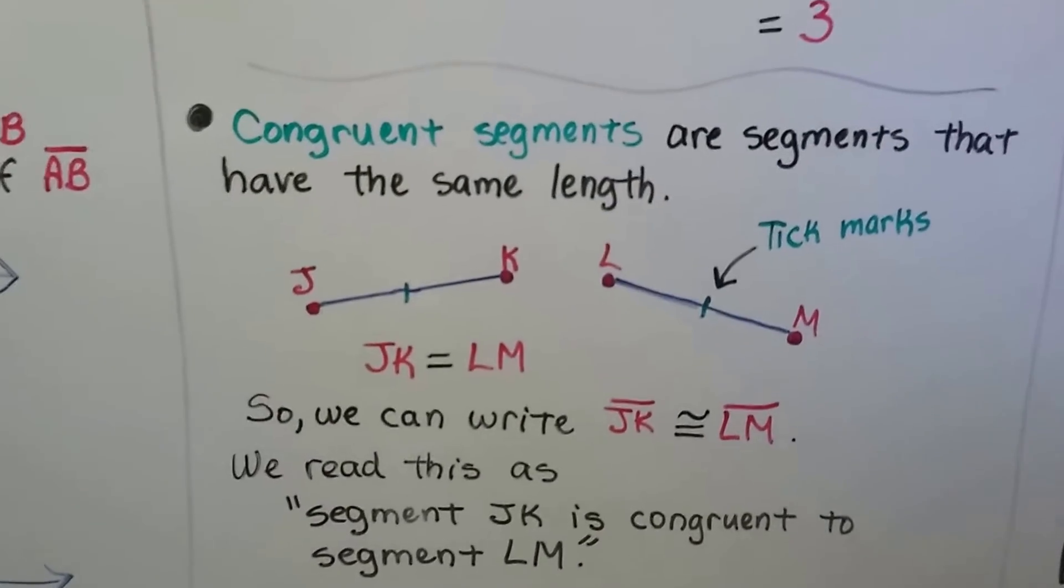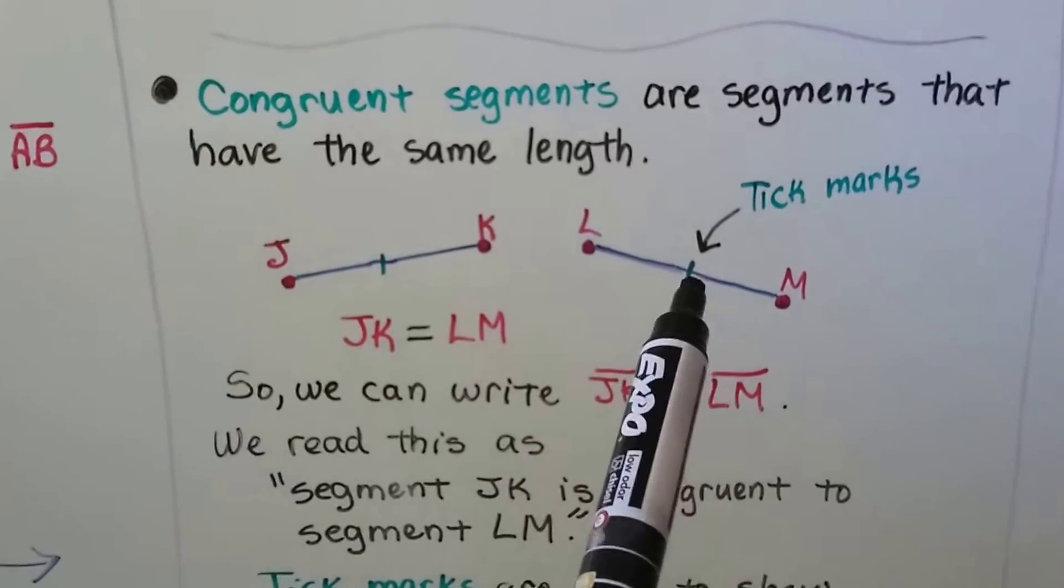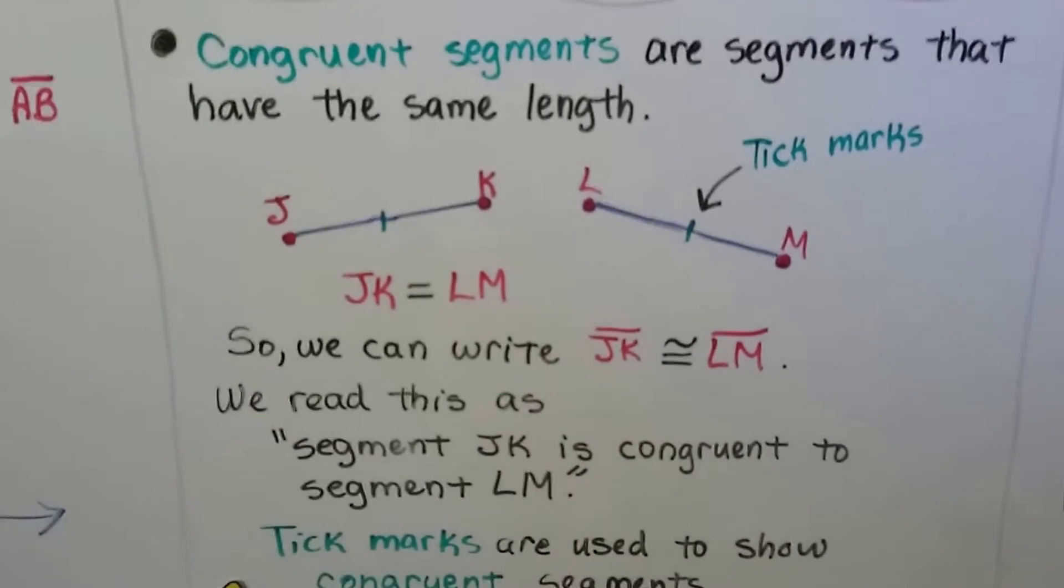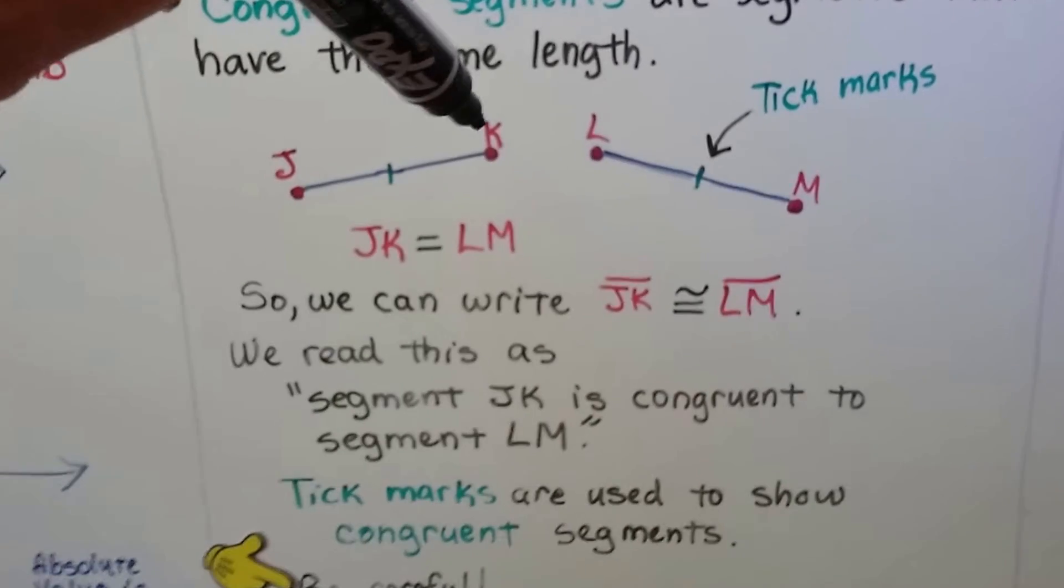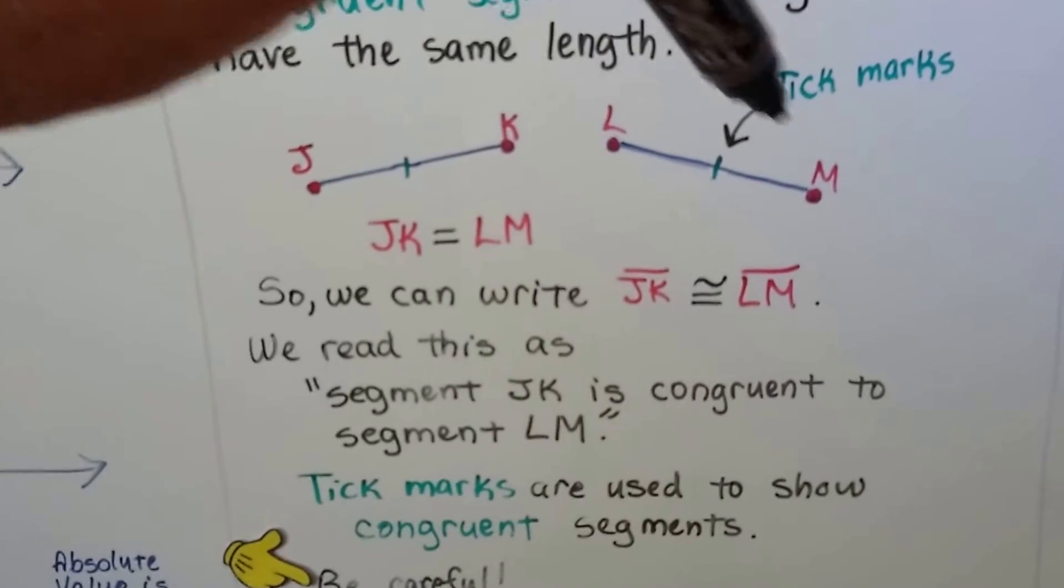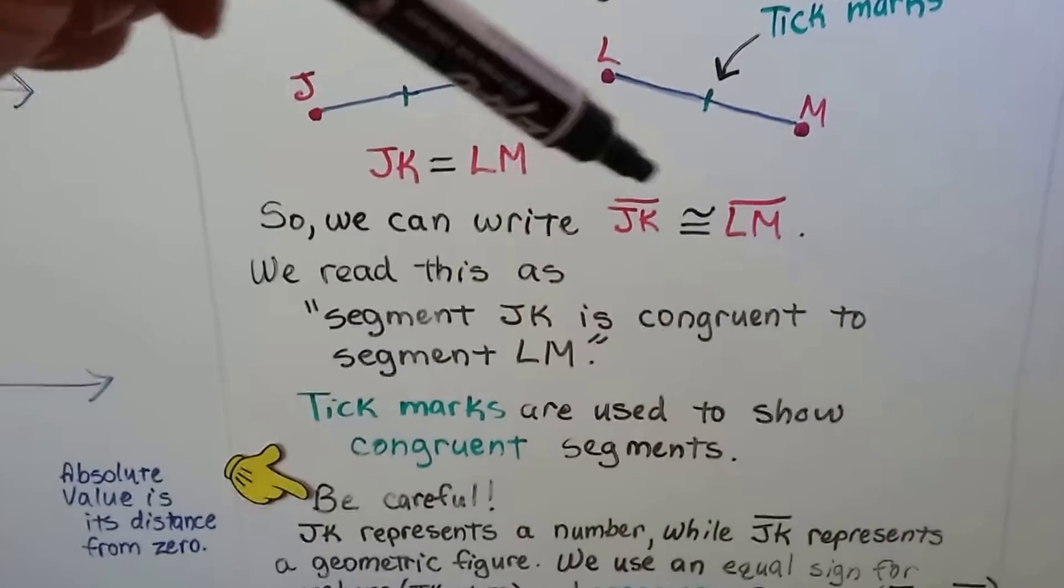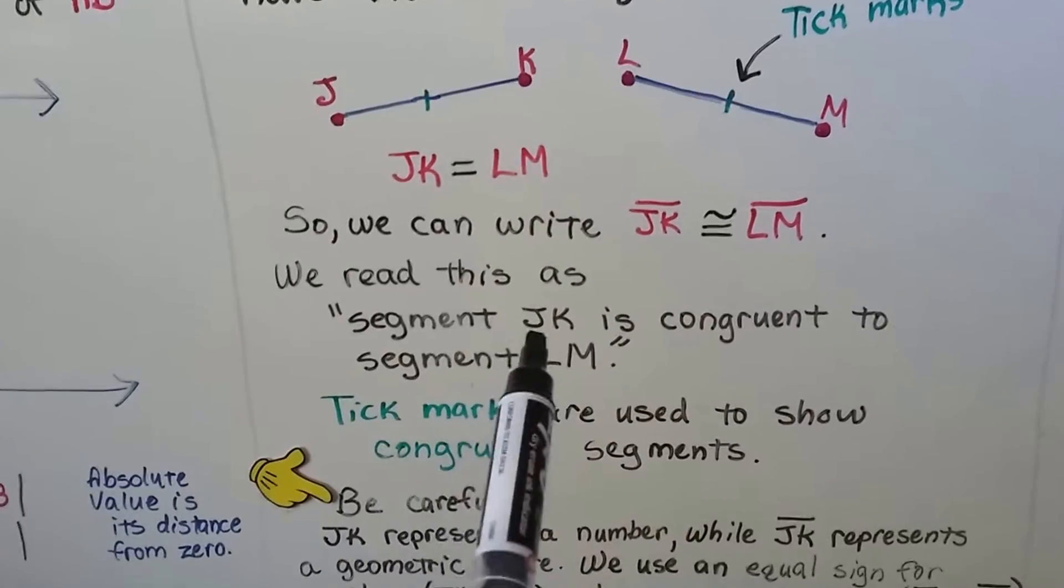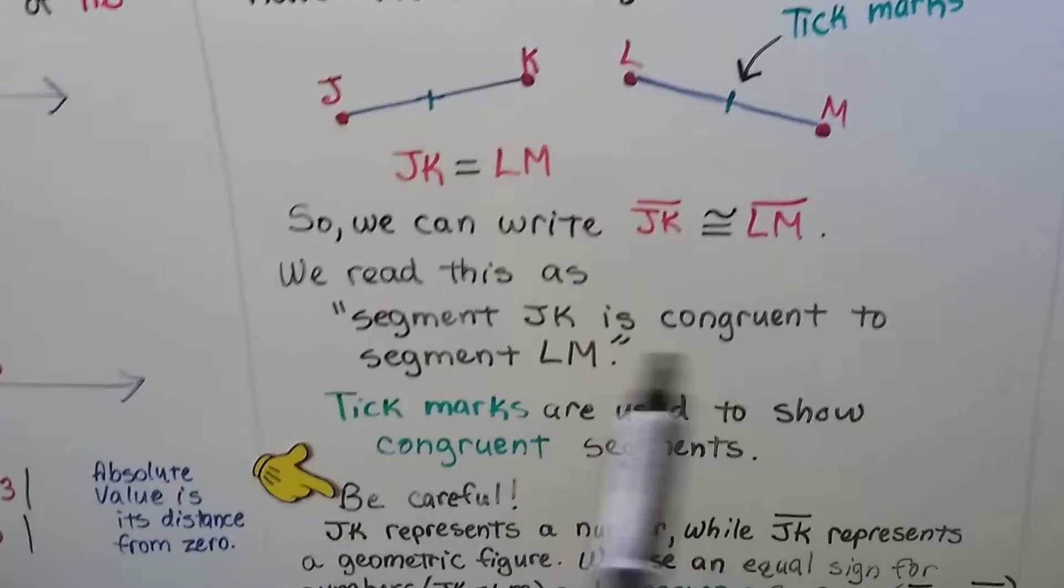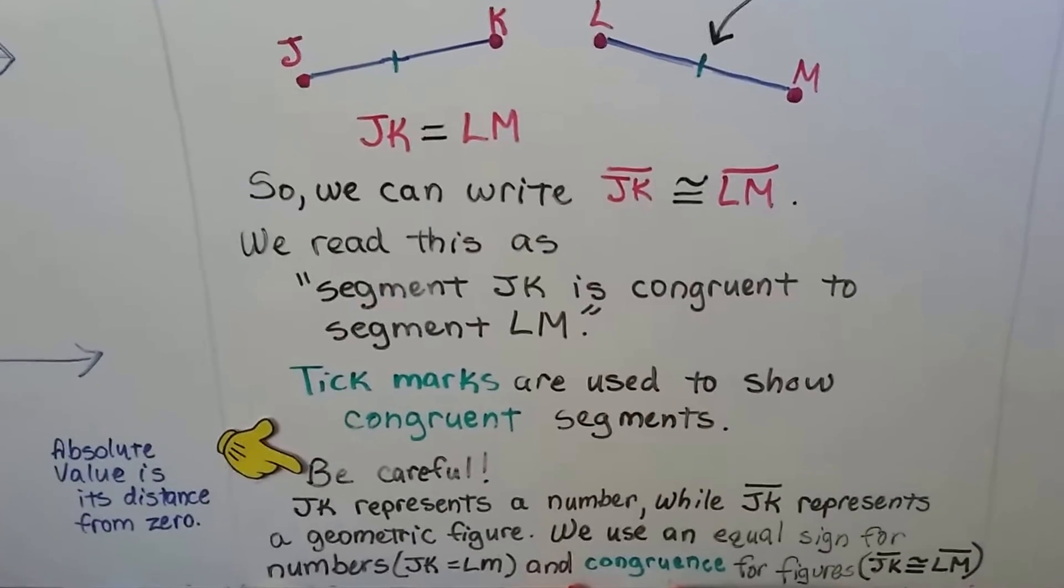So congruent segments are segments that have the same length. And if there's a tick mark here and a tick mark here, we know they're congruent. It's saying from point J to K is the same thing as from point L to point M. And we can write segment JK is congruent to segment LM. And this is how we read it: Segment JK is congruent to segment LM. And tick marks are used to show congruent segments.